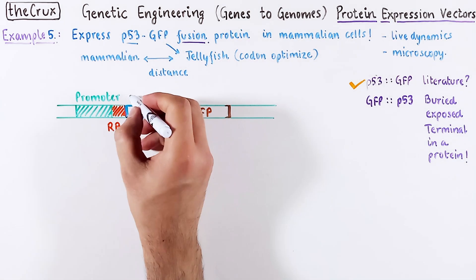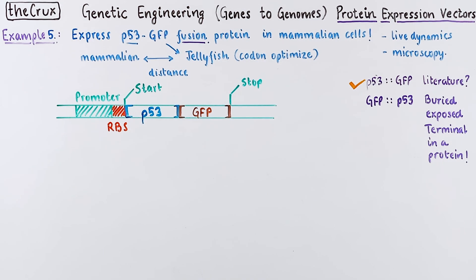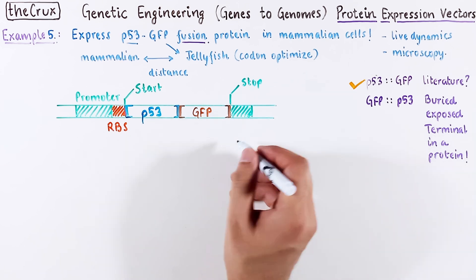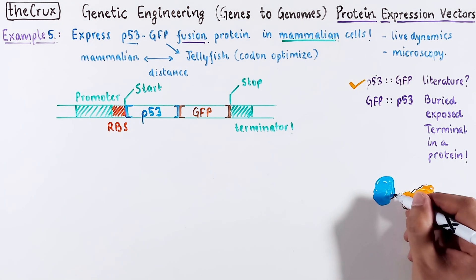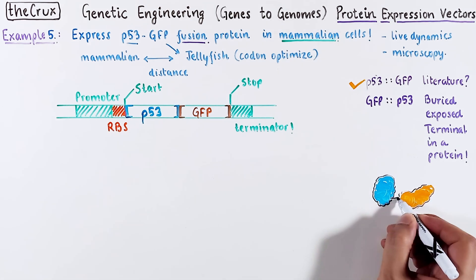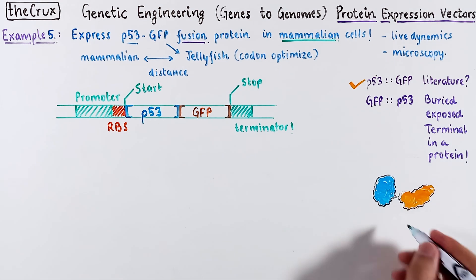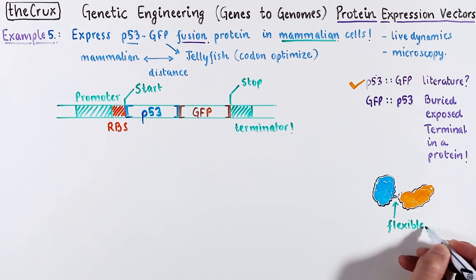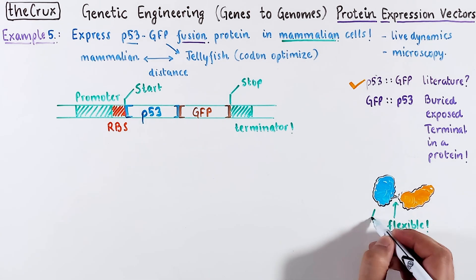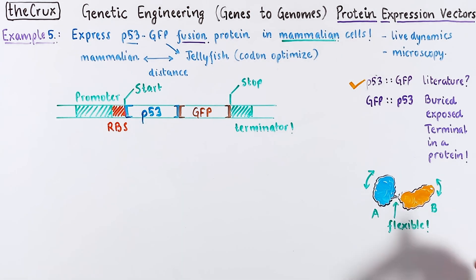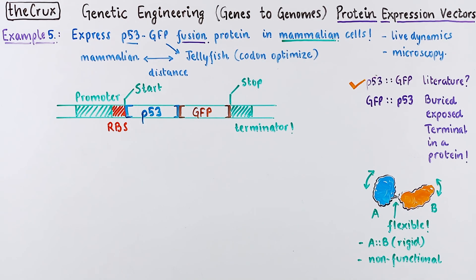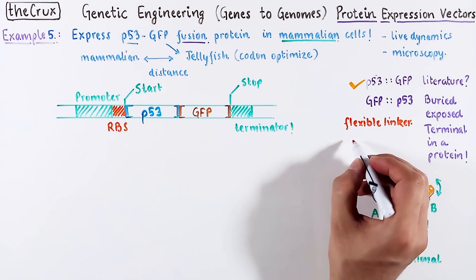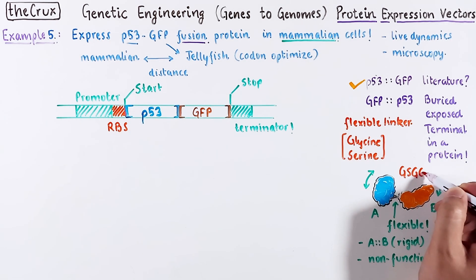When combining these two, you make sure to remove the stop codon from P53 to allow the ribosome to continue translation into GFP. And this gets you the two proteins fused together. However, there's a small catch. There needs to be something flexible in the middle of the two proteins. It makes sure in a fusion protein both partners have room for movement. If the fusion proteins are stacked without flexibility, then both proteins may be non-functional. Generally, a flexible linker is a stretch of repeating glycine and serine residues.